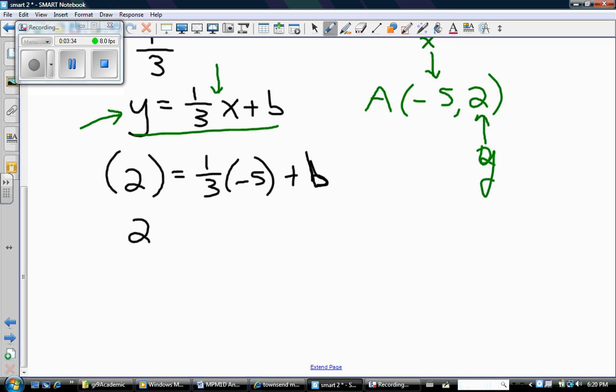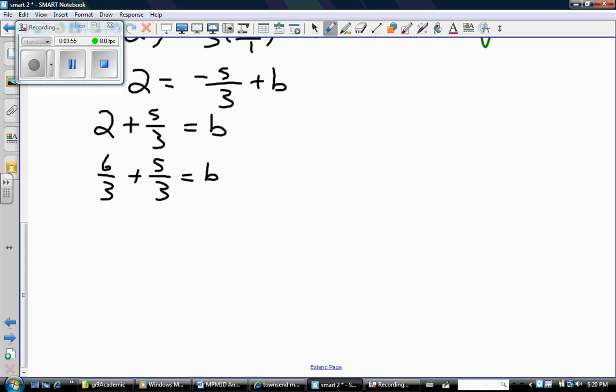So negative 5 times 1/3. Solve for b. So 2 plus 5/3 equals b. So b is 11/3.